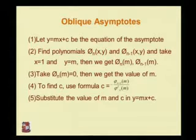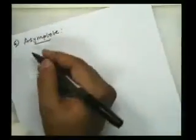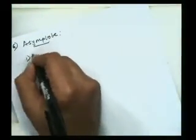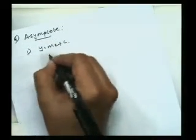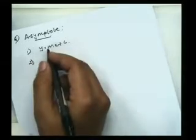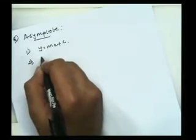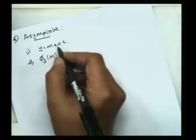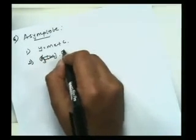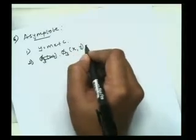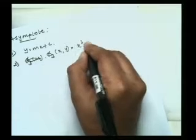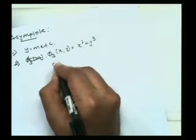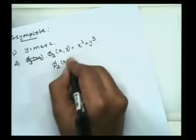By substituting the values of m and c, we get y = mx + c as the equation of the asymptote line. First, assume y = mx + c. Second, to find the asymptotes, consider phi_3(x,y), the highest degree term of the equation. phi_3(x,y) means the third degree term of the equation, which is x³ + y³. Similarly, phi_2(x,y) means the second degree term of the equation.